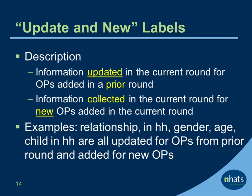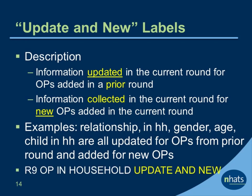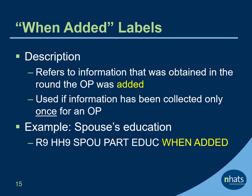For example, information on relationship, whether an OP is in the household, gender, age, and whether a child is in the household all have the opportunity to be updated for OPs from the prior round and added for new OPs. Labels for these variables will have 'Update and New' at the end. 'When Added' at the end of the variable label indicates that the information was collected in the round when the OP was added — used if the information has been collected once for the OP. For example, a spouse's education is collected when a spouse is added to the roster and not updated thereafter.